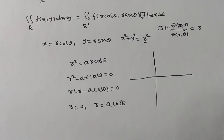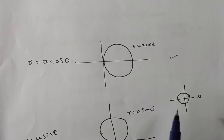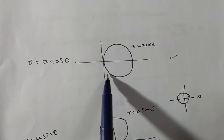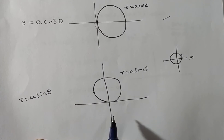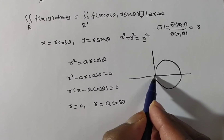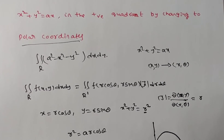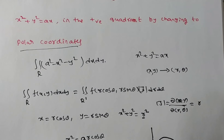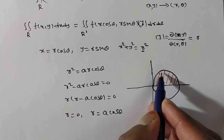I am drawing the circle. r = a cosθ is a special circle — not like the general circle. You have to remember: r = a cosθ is on the right of the y-axis, and r = a sinθ is above the x-axis. The region is in the positive quadrant only — they are asking the positive quadrant. So you have to take only that region.